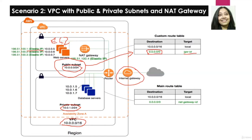We will then provision another EC2 instance in our private subnet. Since this is private, we are not going to associate any elastic IP — it will only have a simple private IP. After provisioning the EC2 instance in the private subnet, we will provision a NAT gateway, associate an elastic IP to it, and ensure we provision the NAT gateway in our public subnet.